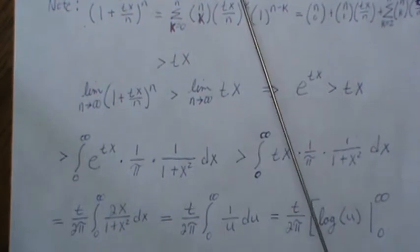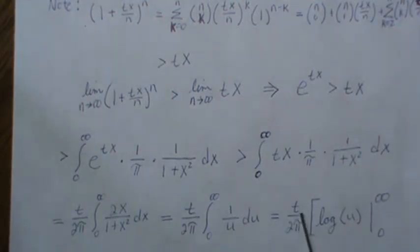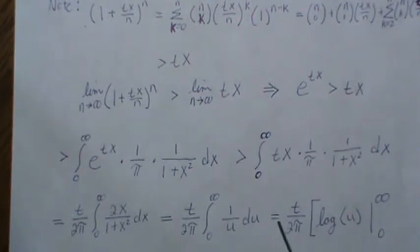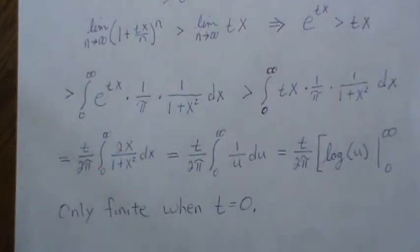This is even smaller than the true integral we want to find, but where is this positive? We need to find values of t where this is positive. It turns out that any value of t we pick, this is going to go to infinity unless we pick t=0. So this is only finite when t=0.